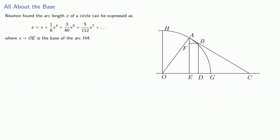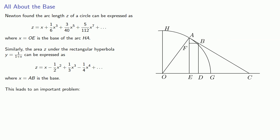And let's put this all together. Newton found the arc length z of a circle can be expressed as the infinite series, where x equals OE is the base of the arc HA. And similarly, the area z under the rectangular hyperbola, one over one plus x, can be expressed as this infinite series, where x equals AB is the base. And this leads to an important problem.